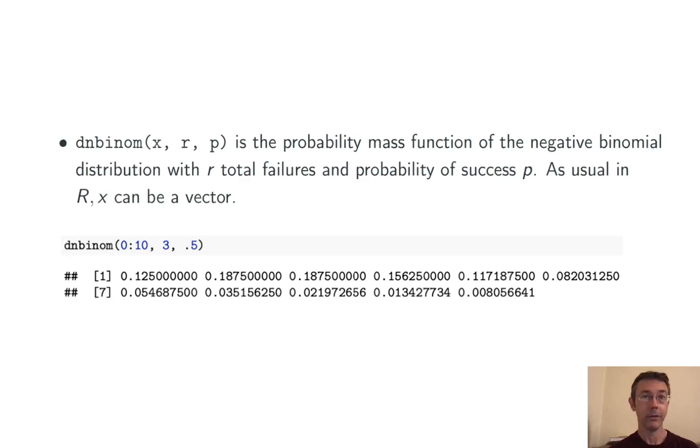So for instance, dnbinom(0:10, 3, 0.5) gives back probabilities of 0, 1, 2, 3, and so on failures before the third success when the probability of success in each trial is 0.5.